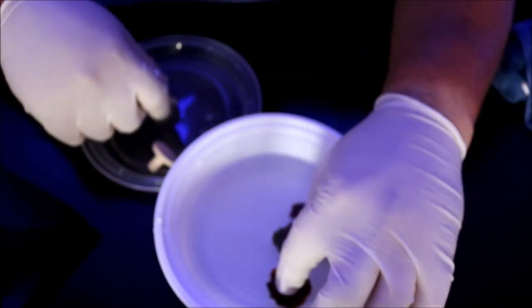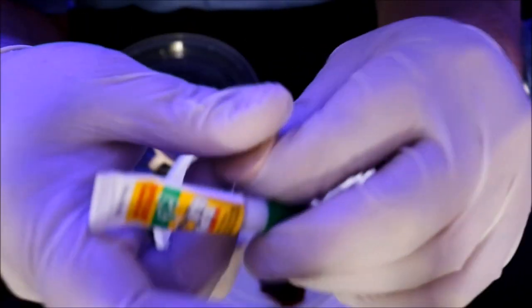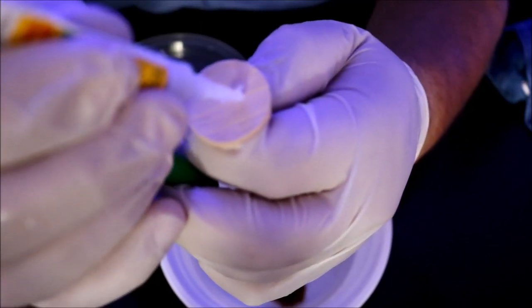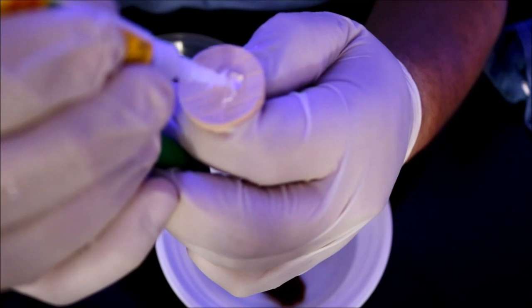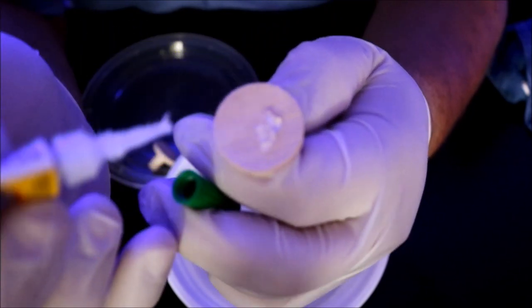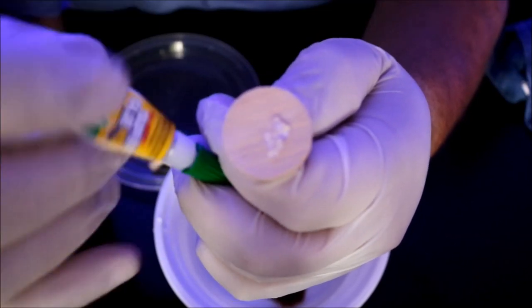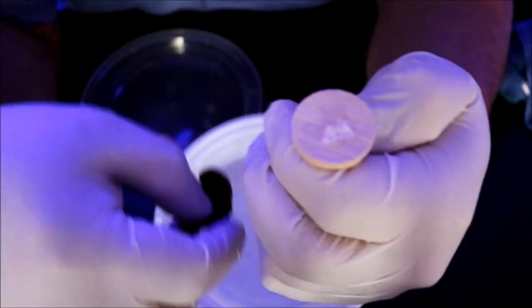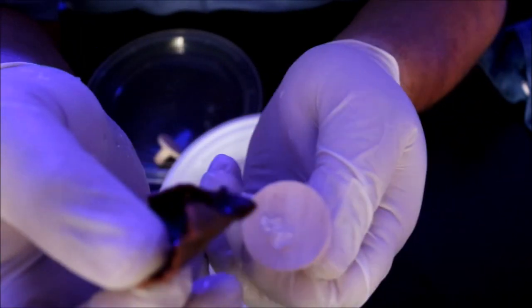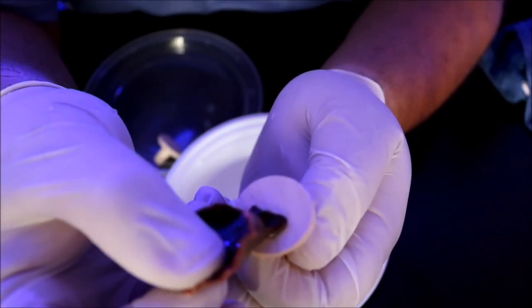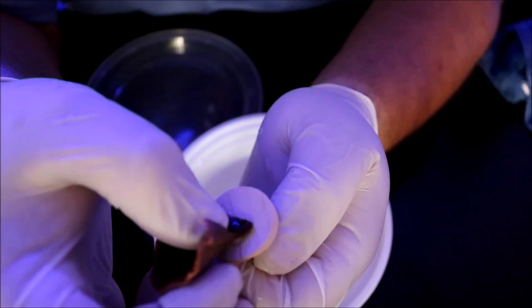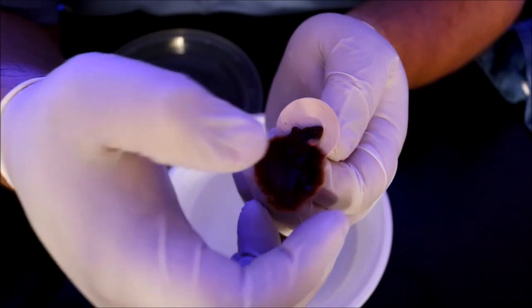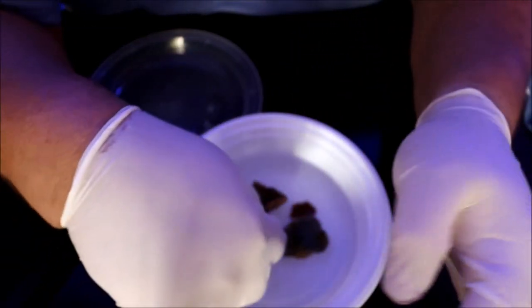So the first thing I want to do is prepare my frag plug by putting a nice piece of glue to glue down the Monte with. Just like that. And now I will take the piece of red and glue it down like that. Now that that's done, I'll put that back in the water.